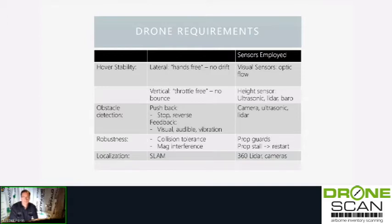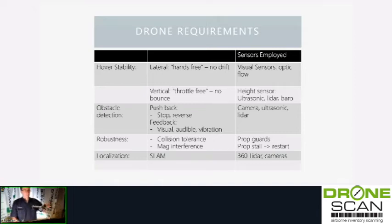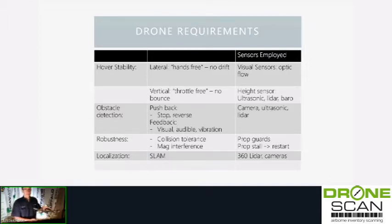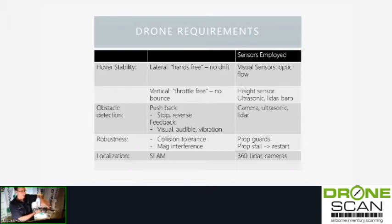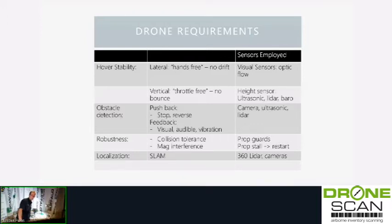Robustness: the drone should be able to handle some basic collisions or touches of objects — not a full-speed crash obviously. We use prop guards for that. Magnetic interference is also a concern — the last thing you want is the drone refusing to take off indoors because of magnetic interference. We've found ways around it: move it around until you find a spot, and ironically if you put it on a sheet of metal that's often neutrally magnetic and it will take off. Worst case, you can hold the drone, arm it, and then take off.